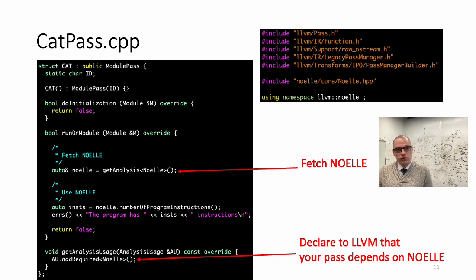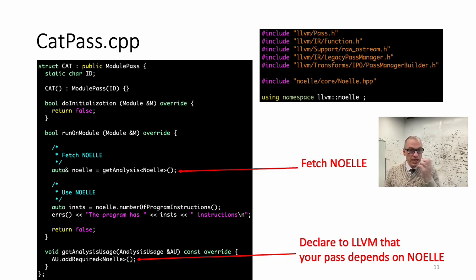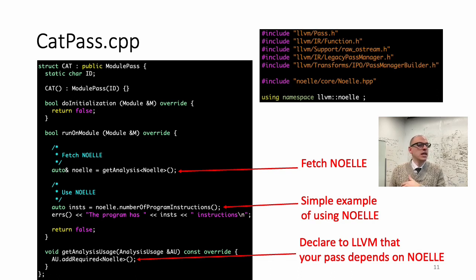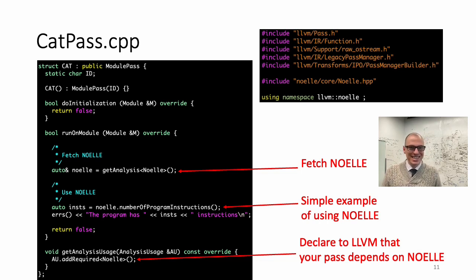Inside your runOnModule, where you do your core analysis and transformation, you fetch Noel using conventional LLVM API. At this point you have the Noel object — the object that implements pass Noel and provides every single abstraction that NOEL provides. Now you can use this to query NOEL and ask for whatever you want. The easiest example is to say how many instructions exist in the whole module — a simple API developed just to show a simple way to use NOEL.